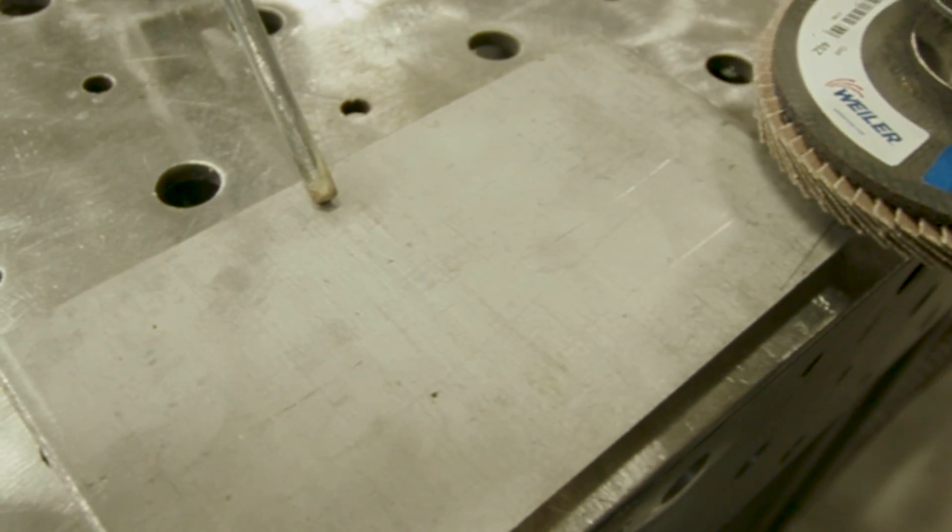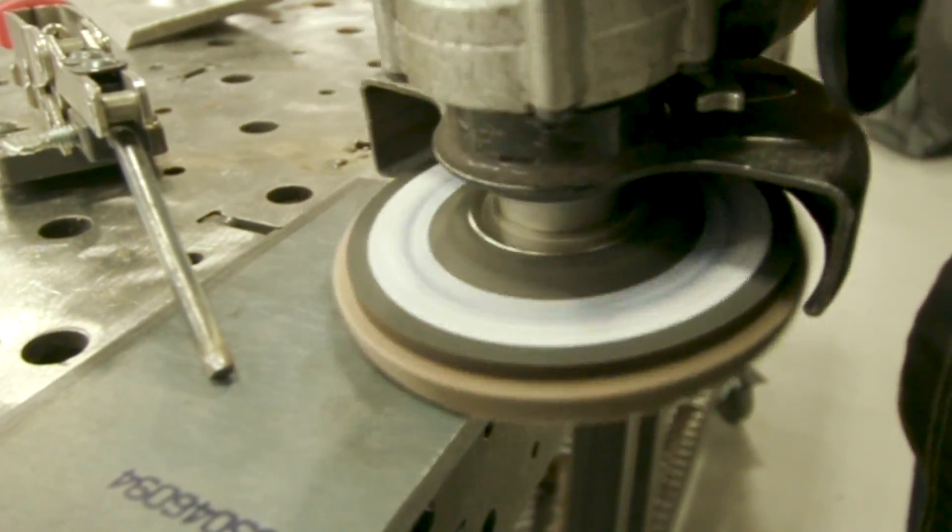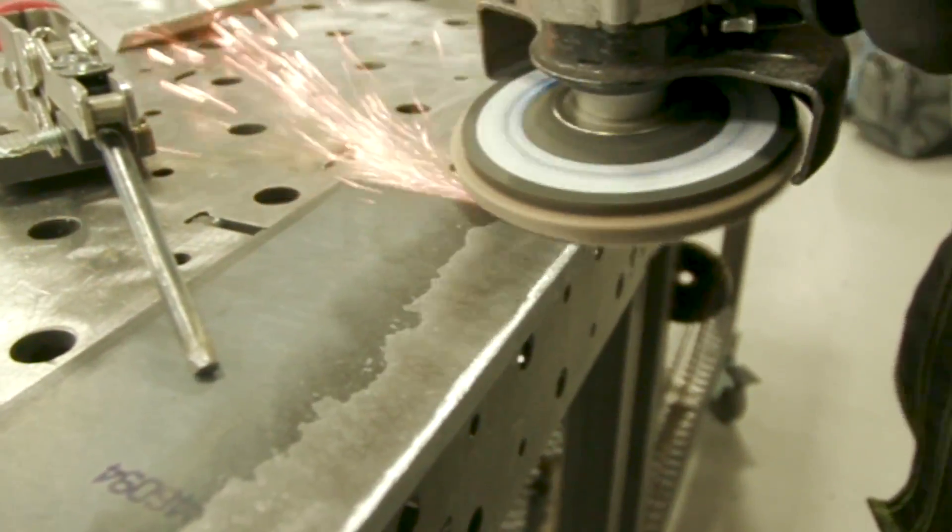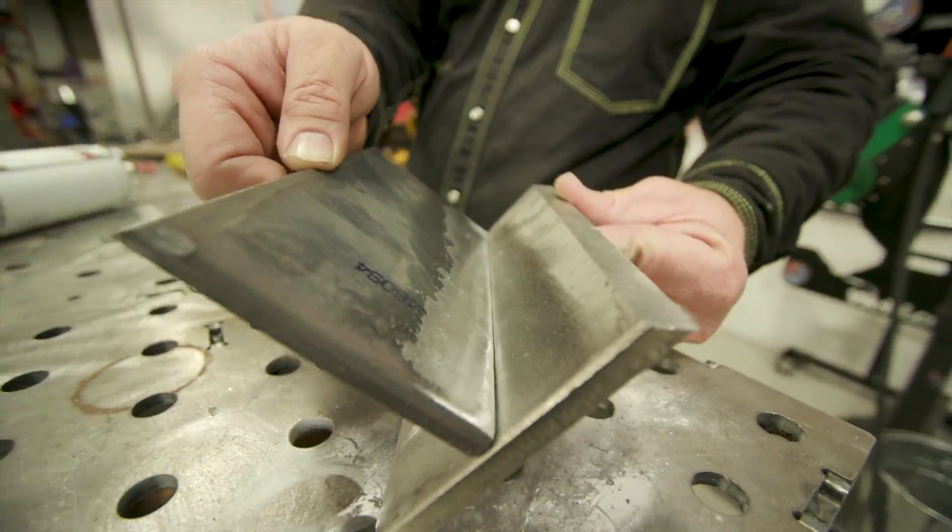All right, so I got everything set up. I went ahead and ran a Weiler Tiger Paw about 40 grit across the surface of the stainless and then took the mill scale off the steel. Just going to fit up a regular T-joint, tack it on both ends and throw it in the flat position.